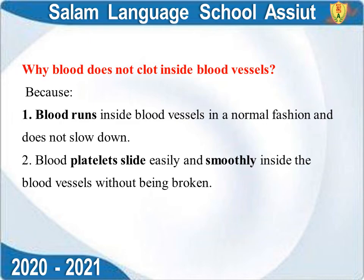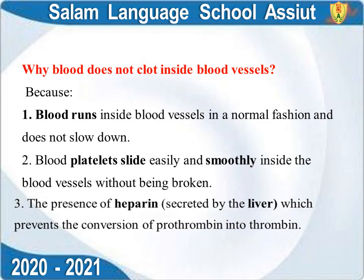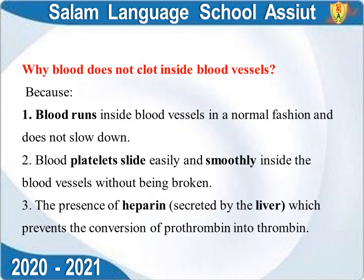Number three — the presence of heparin, secreted by the liver. Heparin prevents the conversion of prothrombin into thrombin, thereby preventing blood clotting inside blood vessels.